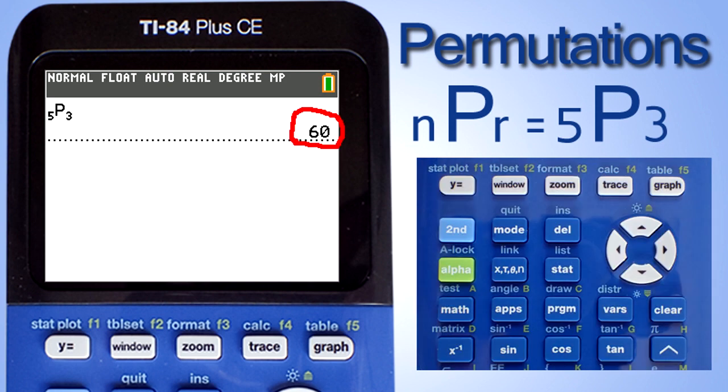Now there to the right is the answer, 60. There are 60 possible combination winning orders for the race with 5 runners and 3 winning places.